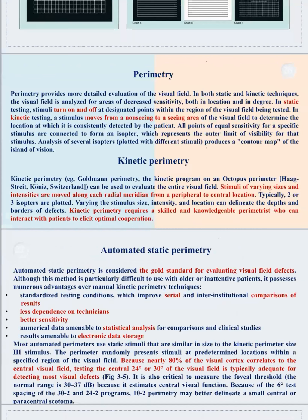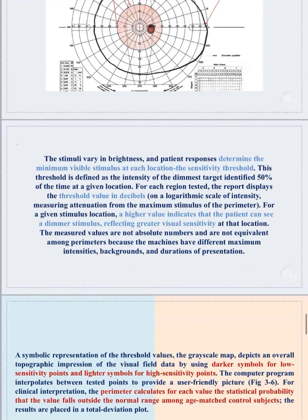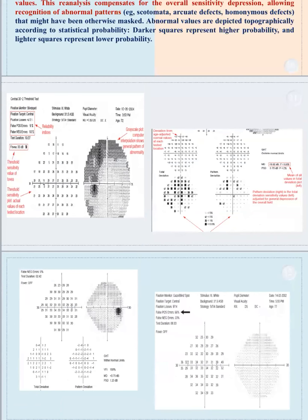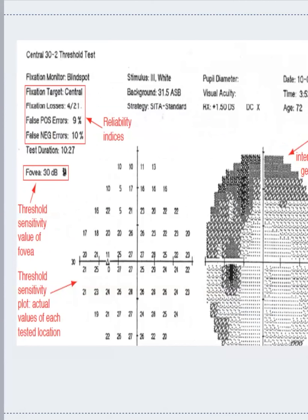The difference between kinetic and static perimetry technique was mentioned in the visual sciences physiology section. For candidates sitting for the first FRCS exam, there is an important session regarding these differences. The most important issue here is how to read a visual field report. The first thing to read is the reliability indices — fixation losses, false positives, and false negatives — these three are extremely important.